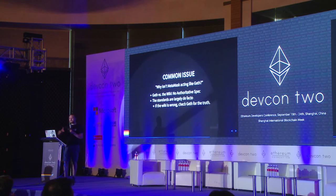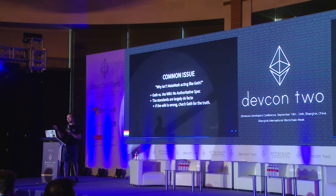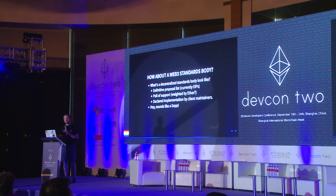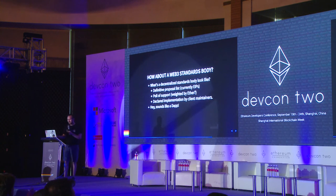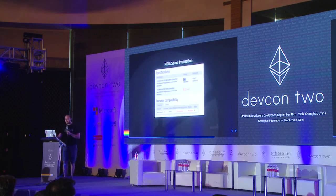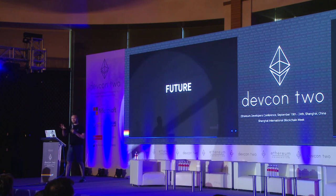Sometimes people ask us why a method is not acting like geth, and it turns out there isn't really a standard right now. We go to the wiki, and if that doesn't do it, we have to go to individual GitHub repos, or it turns out they were using Parity. There are fine distinctions and there isn't a singular source of truth. So I'd like to take this opportunity to say: how about we develop a Web3 standards body? Maybe we could be decentralized and cool on a blockchain, have votes, have a signing key per implementation so they could say they definitely support a given implementation, and maybe there could be on-chain validation. MDN is a great example of standard documentation.